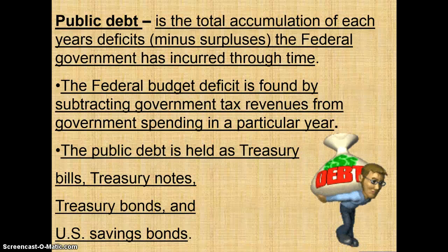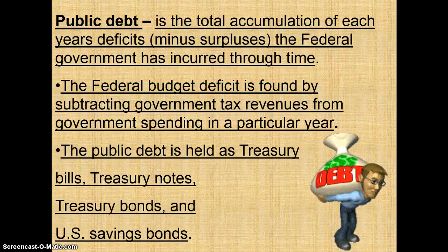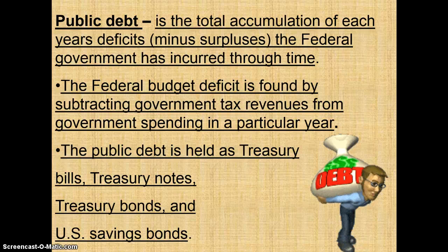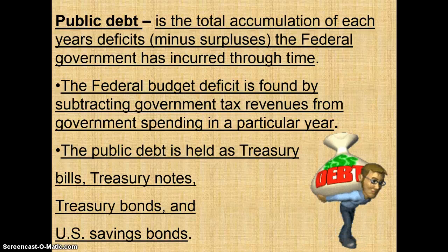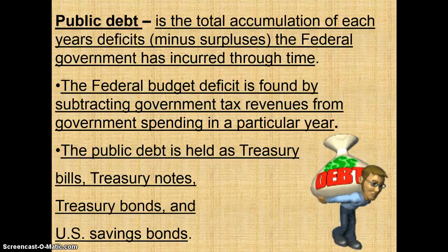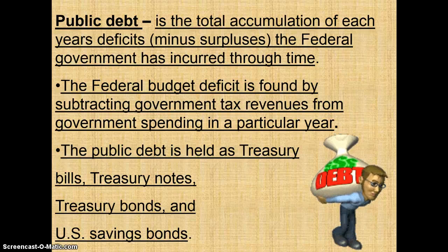Public Debt is the total accumulation of each year's deficits minus surpluses the federal government has incurred through time. The federal budget deficit is found by subtracting government tax revenues from government spending in a particular year. The public debt is held as Treasury bills, Treasury notes, Treasury bonds, and U.S. savings bonds.